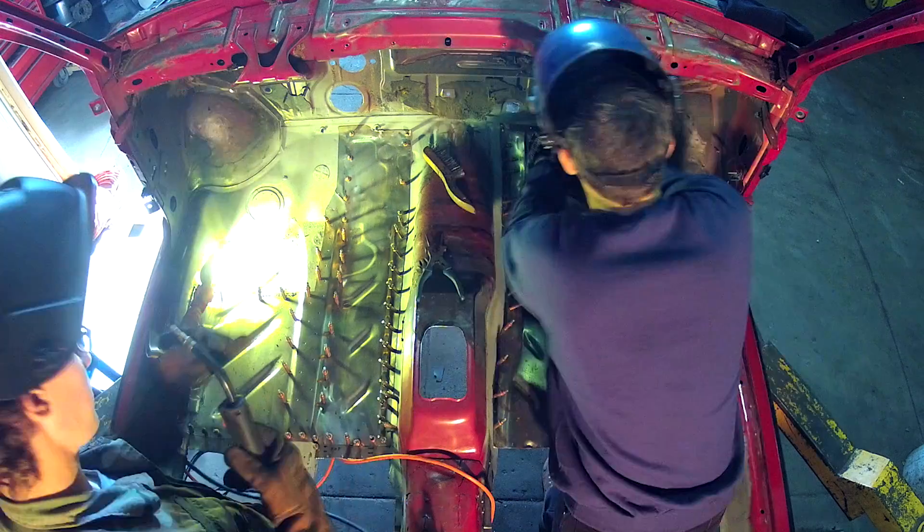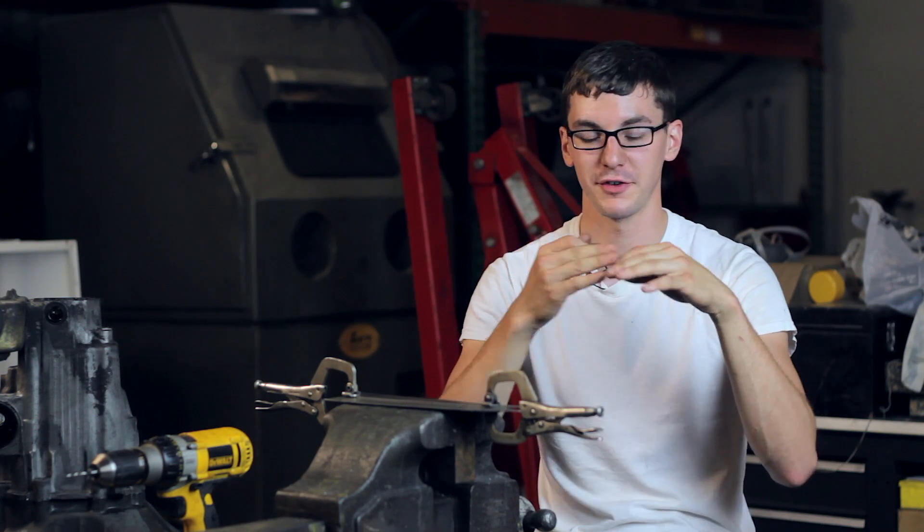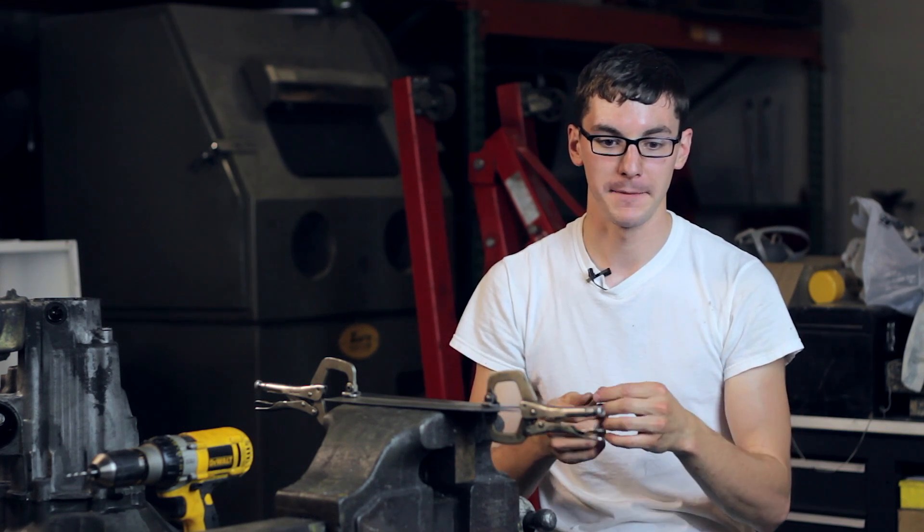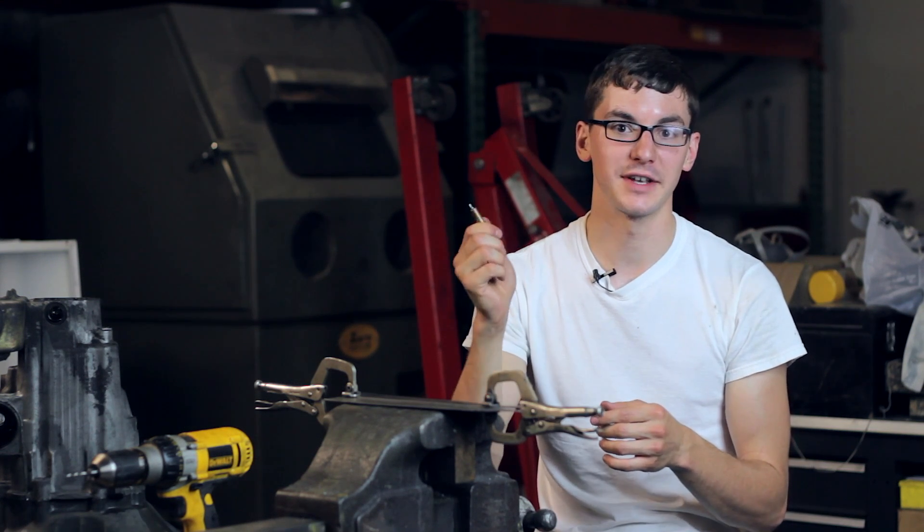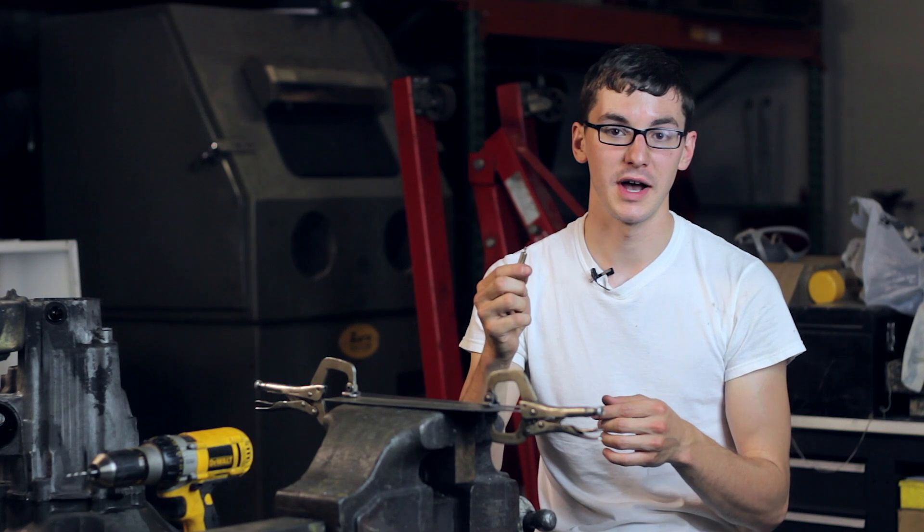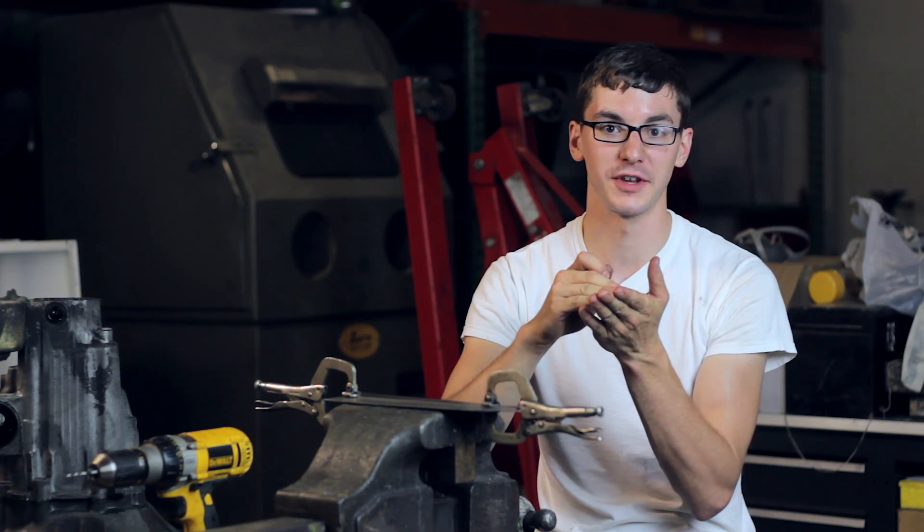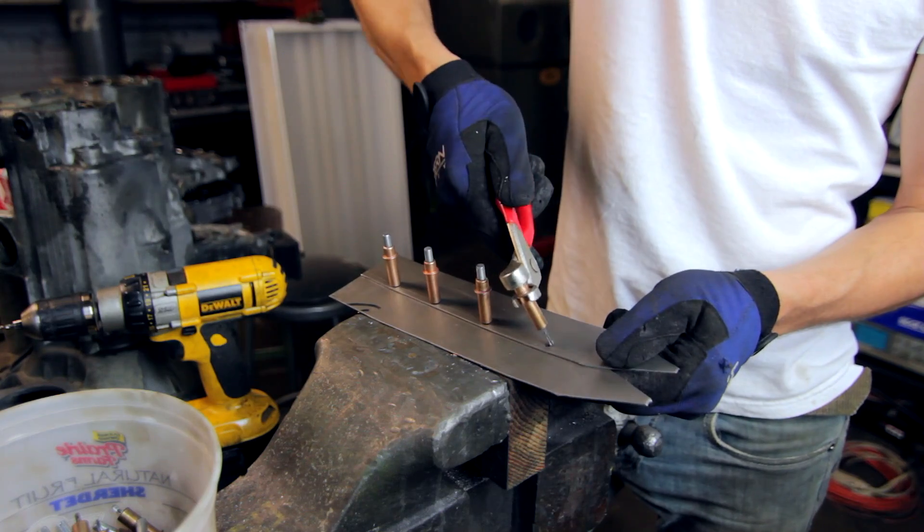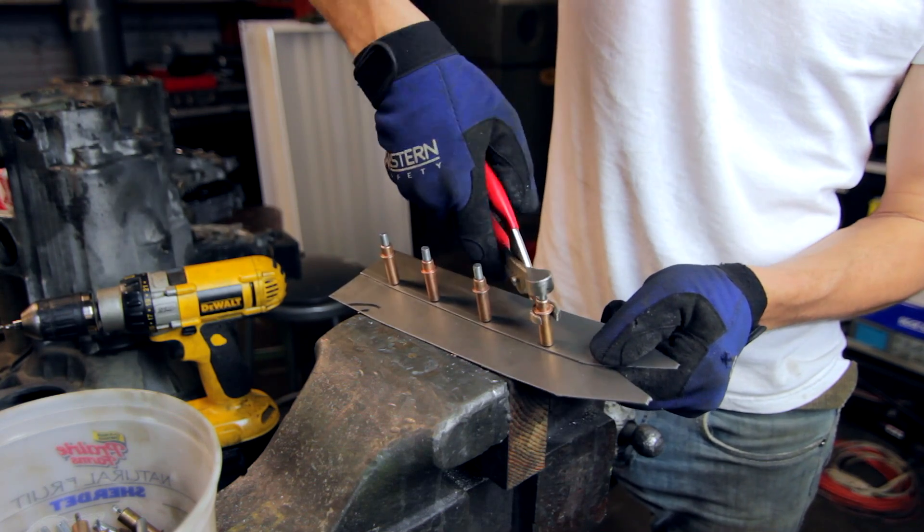If anyone's ever put any kind of thin skin steel together and have tried to fit it up, they know that it never quite wants to sit flush. Especially if you're fitting any kind of curves or any large piece. So these CLECOs act as a temporary rivet to hold those two pieces together for you to weld them eventually or fit them or fasten them however you decide.